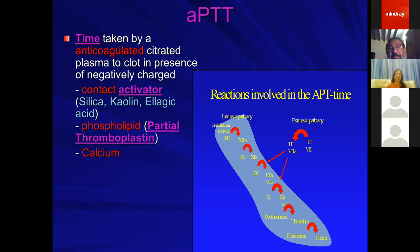What is APTT? APTT is the time taken by anticoagulated citrate plasma to clot in the presence of a negatively charged contact activator like silica, kaolin, or ellagic acid, in the presence of phospholipid — called the partial thromboplastin. That is why this is called the activated partial thromboplastin time. Calcium has to be added to recalcify the citrated plasma.